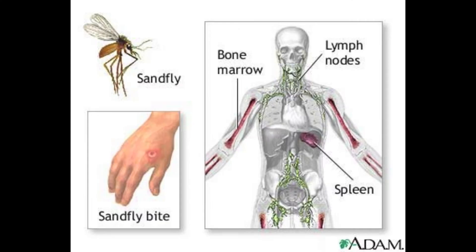They then invade monocytes of the blood and macrophages of the spleen, liver, bone marrow, lymph nodes, and other tissues of the reticuloendothelial cells.